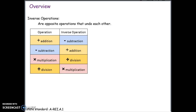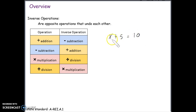Just to recap on inverse operations: inverse operations are opposite operations that undo each other. The opposite of addition is subtraction, and the opposite of subtraction is addition. For multiplication it is division, and for division it is multiplication. So if we have x plus 5 and we want to solve for x, we need to rearrange this equation so we have x by itself. In order to get rid of this 5 that is being added, we do the inverse which is subtraction and subtract what we want to eliminate.